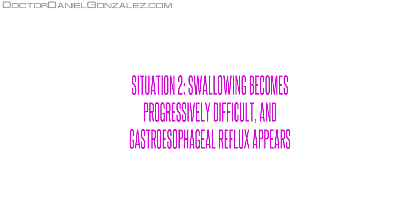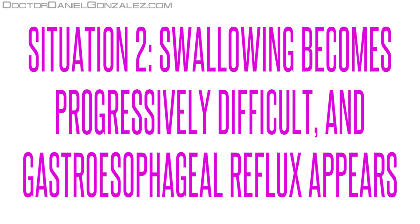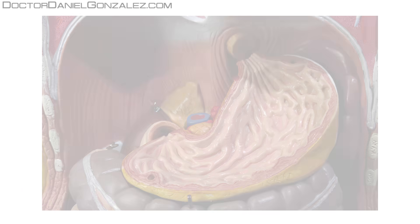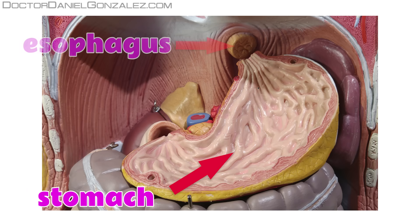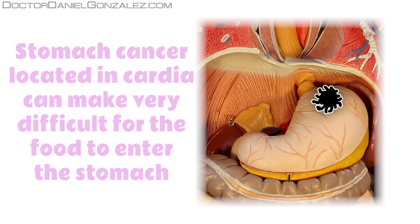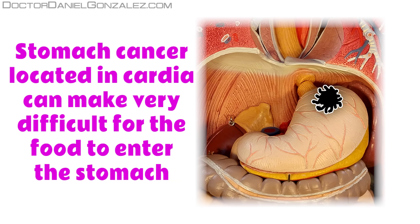Situation 2. Swallowing becomes progressively difficult and gastroesophageal reflux appears. When stomach cancer is located in the region of entry of food from the esophagus to the stomach, an area called cardia, the tumor can hinder the entry of food we have eaten, producing two symptoms.